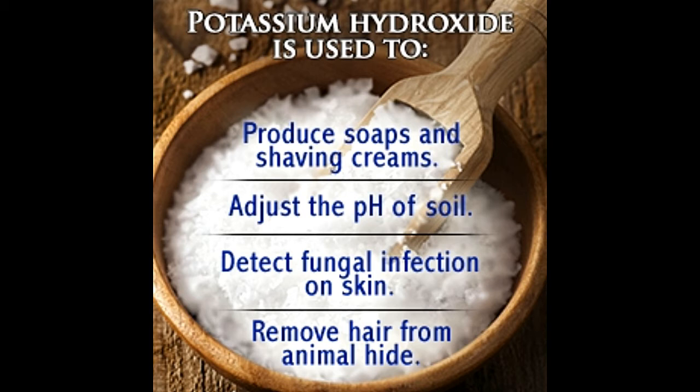Potassium hydroxide, commonly known as caustic potash or lye, is a water-soluble compound which has myriad applications in industry. This solid, odorless, and colorless compound is represented by the formula KOH. It is a strong base and when dissolved in water, produces a significant amount of heat. It is available in the form of white or slightly yellow lumps, rods, and pellets. Sodium hydroxide or caustic soda exhibits properties similar to those of KOH, and is available at a relatively lower cost.